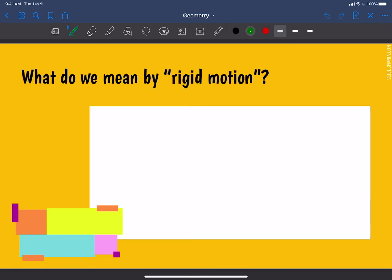So what do we mean by rigid motion? What do we mean when we say rigid motion? Well, imagine you have a coffee table. Don't mind my horrible drawing of my coffee table.